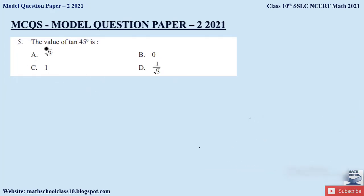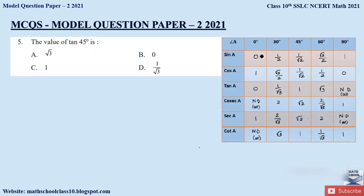Question 5: The value of tan 45° is? To answer this, you need to know the trigonometric table from Introduction to Trigonometry, which covers sin, cos, tan, cosec, sec, and cot values for 0°, 30°, 45°, 60°, and 90°. You must memorize all these values. tan 45° = 1. The correct option is option C.